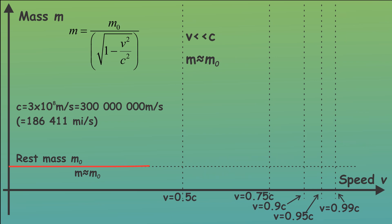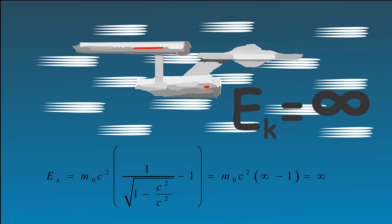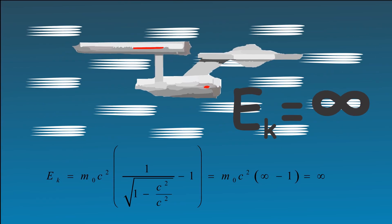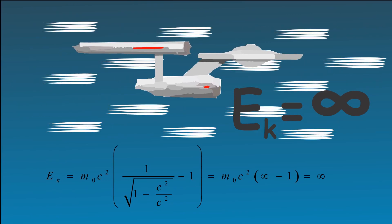And when the body would move with the speed of light, its mass would be infinite. Such a body moving with the speed of light and with an infinite mass would have an infinite amount of kinetic energy.